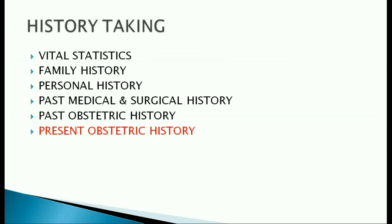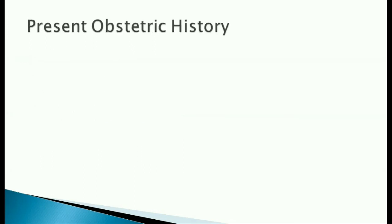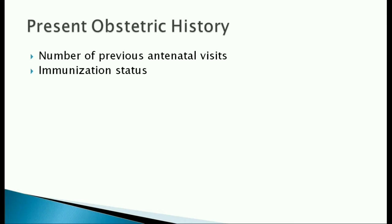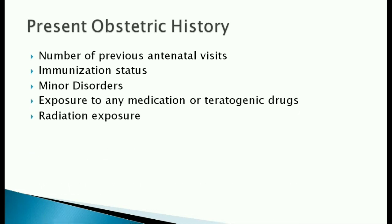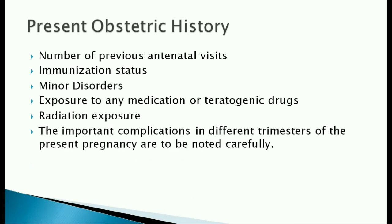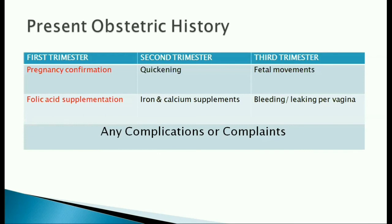Next is the present obstetric history — the details of the present pregnancy. We note the number of previous antenatal visits or whether this is her first antenatal checkup. Find out about her immunization status, especially TT. Ask if she experienced any of the minor disorders in pregnancy. Ask if there was any exposure to radiation or drugs, especially teratogens. The events and details in each trimester should be carefully noted. Important points in the first trimester include confirmation of pregnancy and folic acid supplementation.